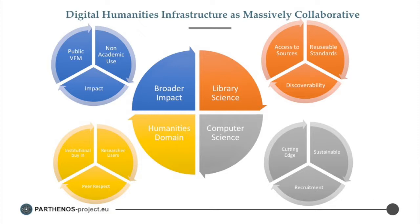On the idea of having impact: you're going to have a public value-for-money question, non-academic use, and a whole impact debate coming in. You're also going to have library science questions about access to sources, reuse of standards, and discoverability. In the humanities domain there will be institutional buy-in, researchers as users, but also peer respect — because without peer respect no researcher will do serious work in an infrastructure. And from a computer science point of view, the underpinning should be cutting-edge and sustainable, and you need to recruit the right people. This very broad set of collaborative forces really drives what happens in a research infrastructure.